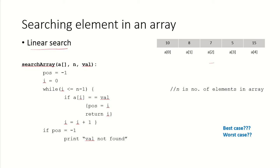Suppose we are looking for a value 5 — in that case our program should be able to return index 3. Let's see how we can create a function like this. In the function we are passing an array, we are passing the number of elements in the array, and we are passing the value that we are looking for.